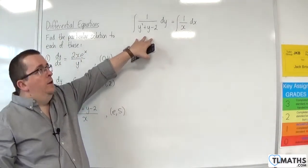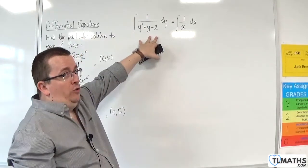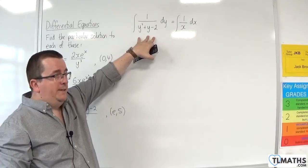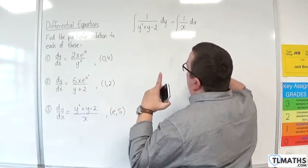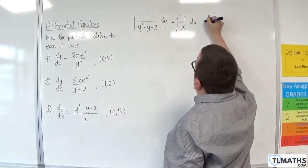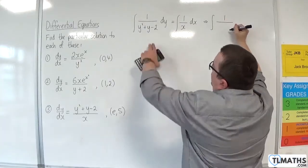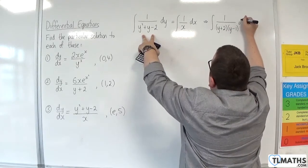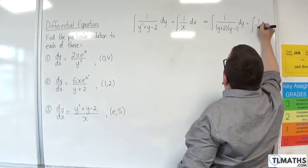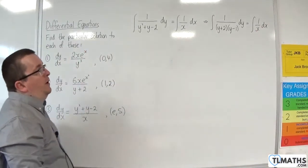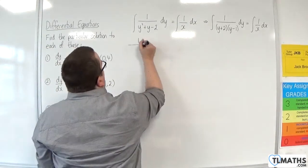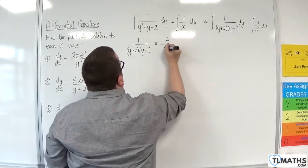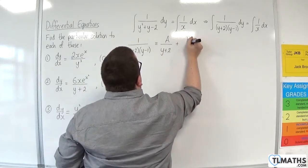On the left-hand side, the bottom doesn't differentiate to a multiple of the top, unfortunately. So the next avenue is: can we factorise the denominator? We're going to go down the partial fractions route. It factorises to (y + 2)(y − 1). So now I need to do partial fractions: 1 over (y+2)(y−1) is equivalent to A over (y+2) plus B over (y−1).